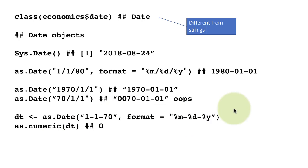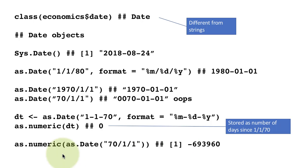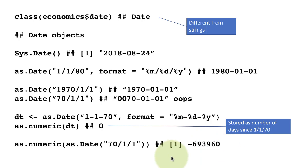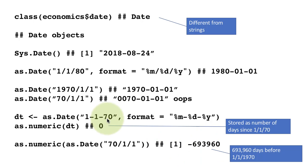Does that mean we cannot represent years before 1970? Not at all. For example, as.numeric(as.Date('7011')) — remember, this converts to AD 70, not 1970 — shows as a large negative number, because AD 70 is that many days before January 1, 1970. It can represent any year; it's just a convention that 1970 is 0. Anything before is negative, anything after is positive.